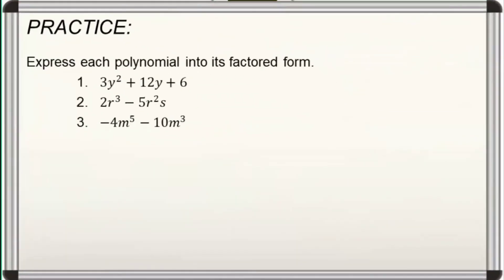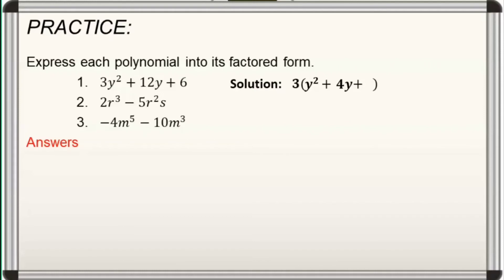Let's have more practice on this. Express each polynomial into its factored form. Let us discuss the answers. For number 1, the common monomial factor is 3. So, we factor out 3 and find the remaining factor by dividing each term of the given polynomial by the common monomial factor. 3y squared divided by 3 is y squared; 12y divided by 3 is 4y; and 6 divided by 3 is 2. Hence, the factored form of 3y squared plus 12y plus 6 is 3 times (y squared plus 4y plus 2).